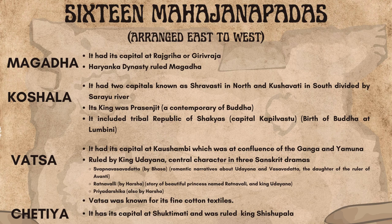Koshala also included the tribal republic of the Shakyas, with capital at Kapilavastu, and Buddha was born at Lumbini within this region.